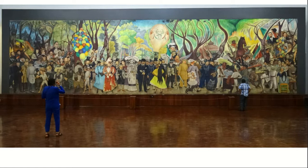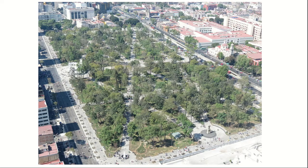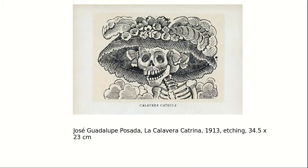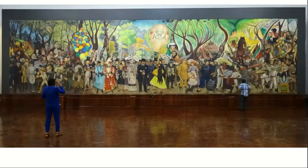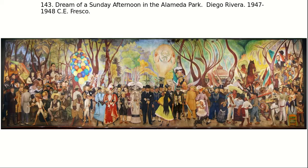This mural was located in Alameda Park — think of it like Central Park in New York City, the central gathering place, a really famous park in Mexico City. Diego Rivera fits into Social Realism. Think back to the Realist movement of the 1850s and artists like Gustave Courbet showcasing the realities of life — Social Realism follows that tradition.